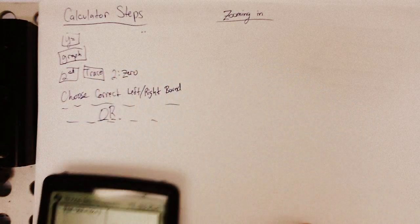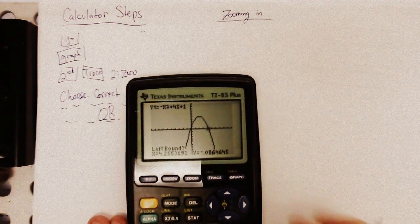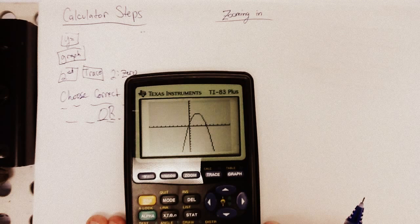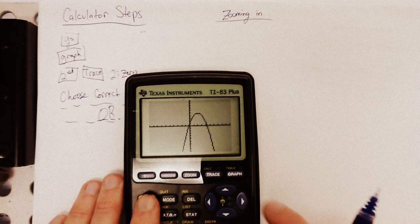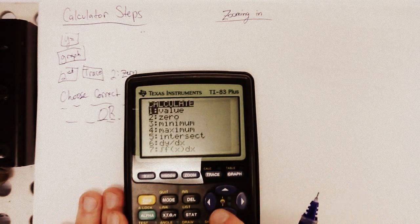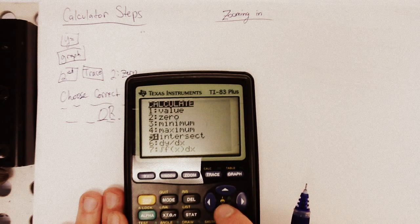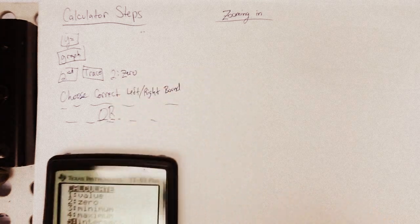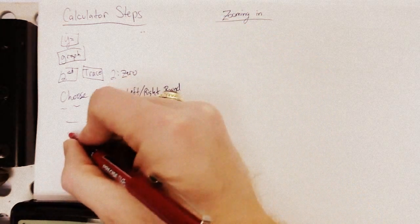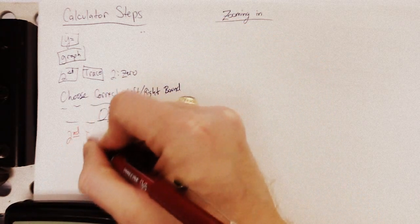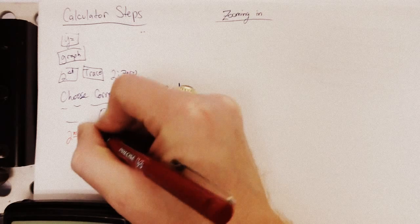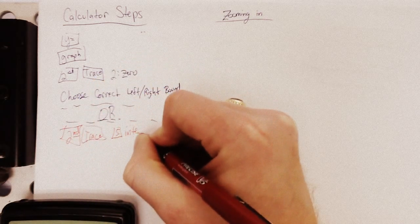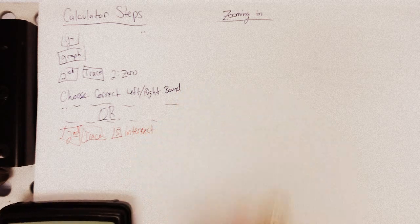If you go back to that last example, what we just did, pull it back up, hit graph. Well, another thing I can do is second trace and intersect, which is option five. So, our big or, here from second trace do option five instead of two. Five is intersect. Okay. Now, if you choose that,